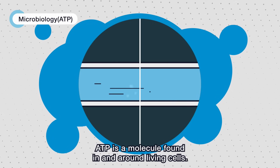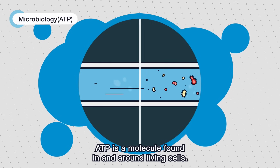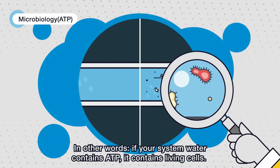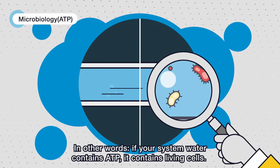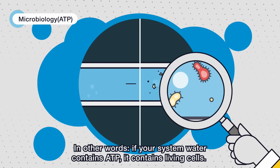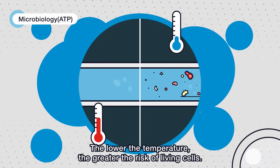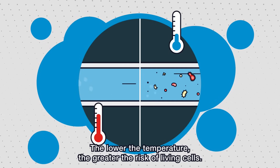ATP is a molecule found in and around living cells. In other words, if your system water contains ATP, it contains living cells. The lower the temperature, the greater the risk of living cells.